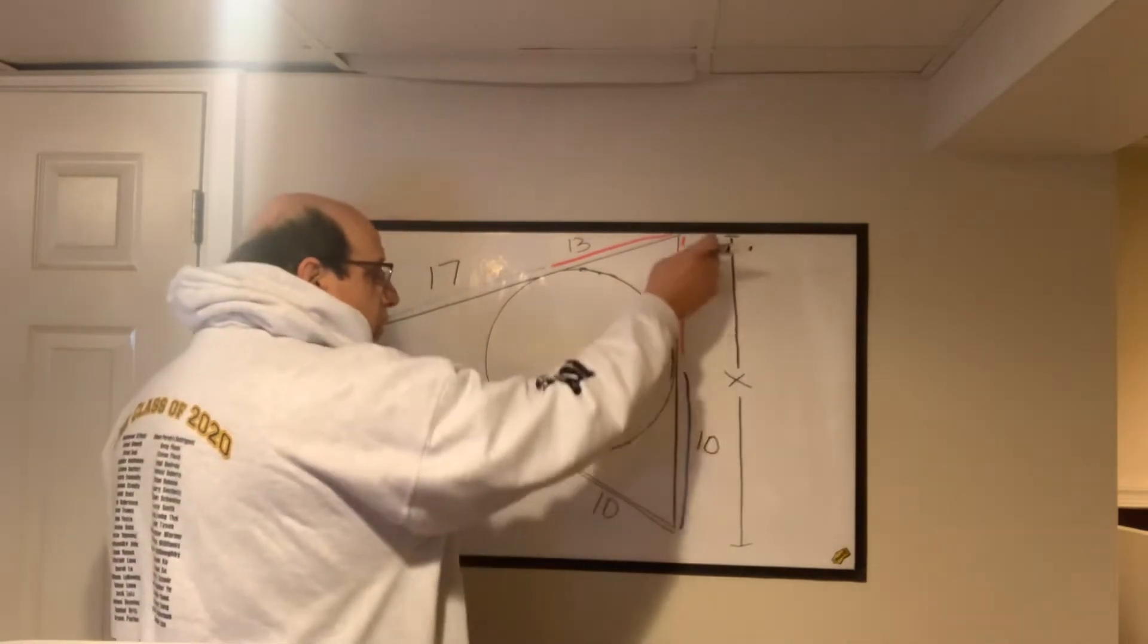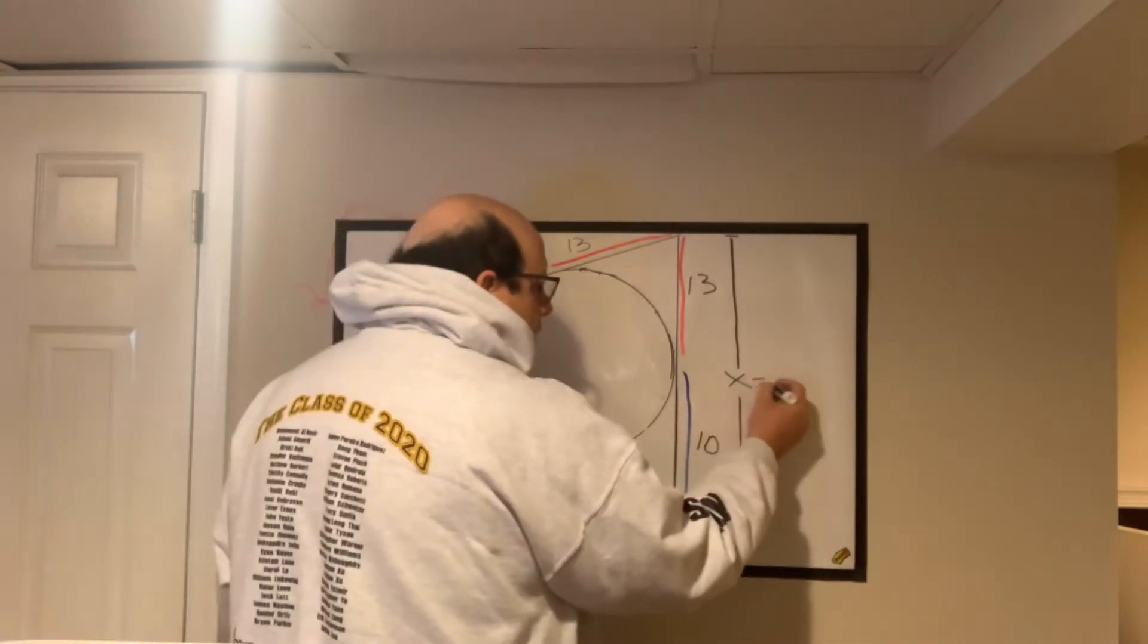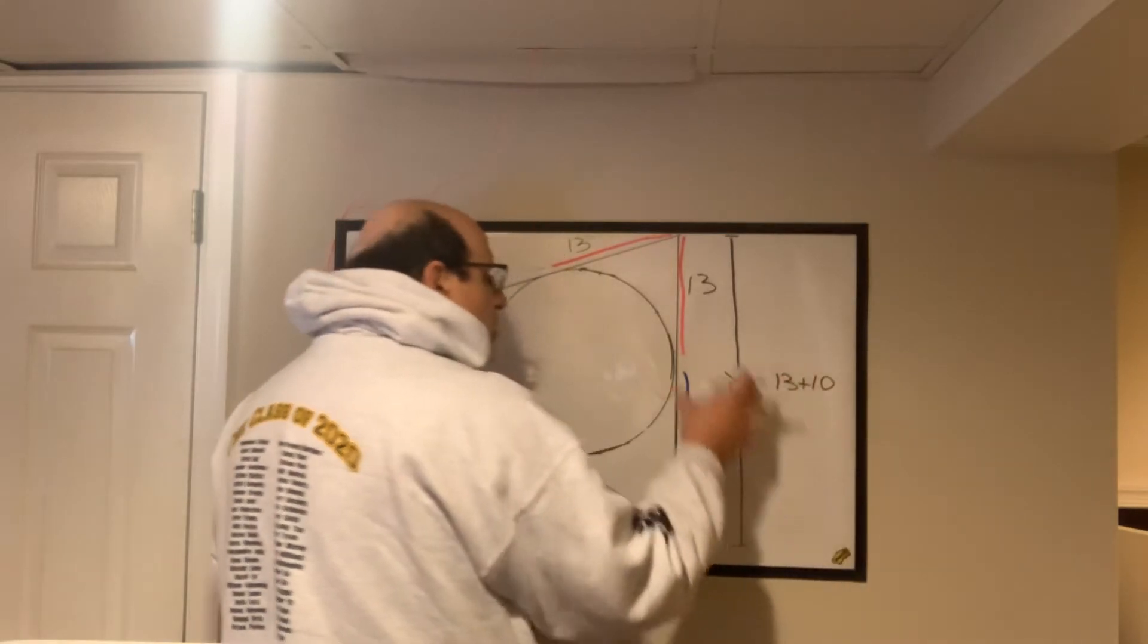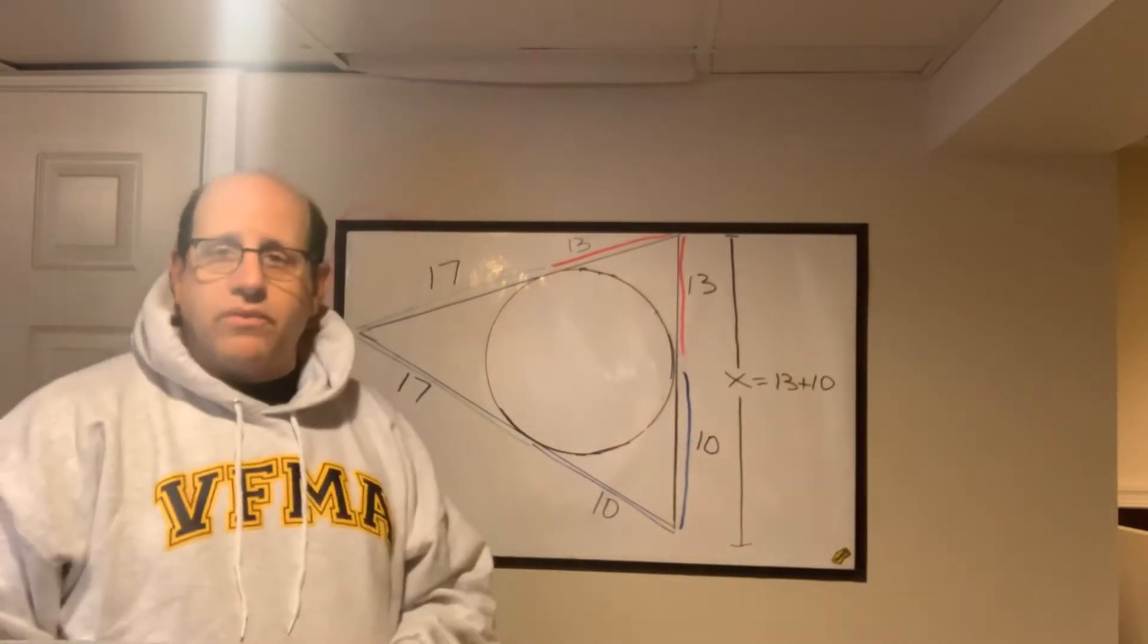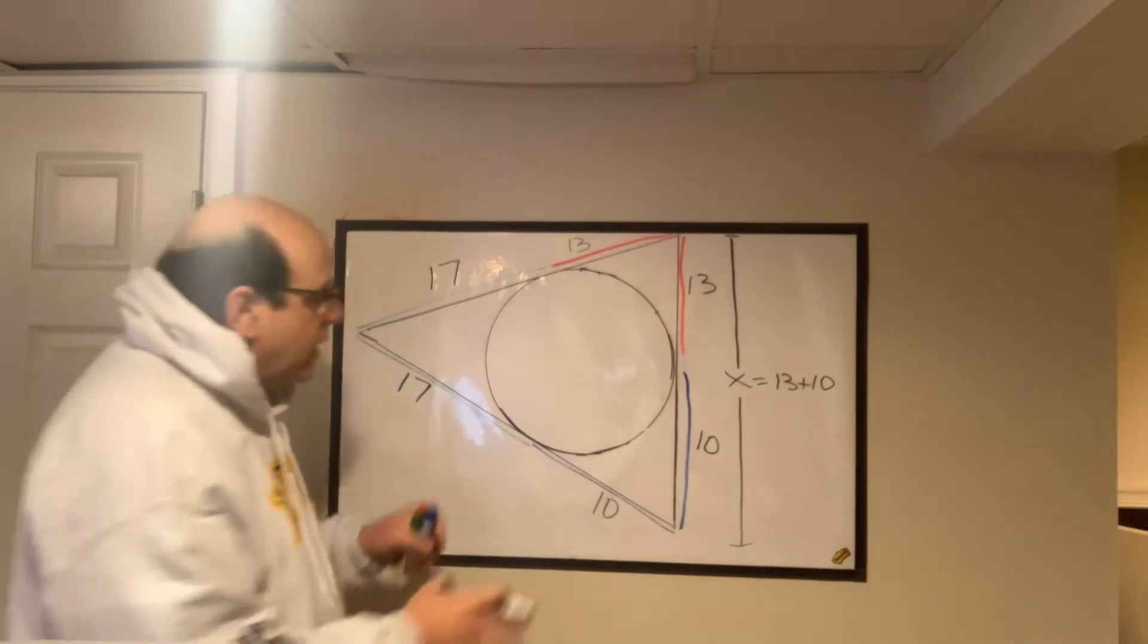Now, if I know that this is 13, and this is 10, I can just add them together. It's 13 plus 10. And you could have done that in your head. I know you could have done that in your head. But I want to write it out. So you see what it looks like. There it is.